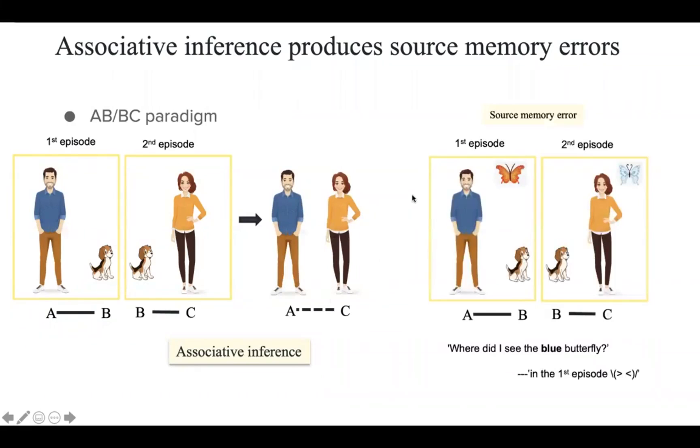However, in more naturalistic settings, you could see many other details in the same episodes. Merging together AB and BC associations could make people feel confused about where they actually see these details. Like I might be confused about where I actually see the blue butterfly.